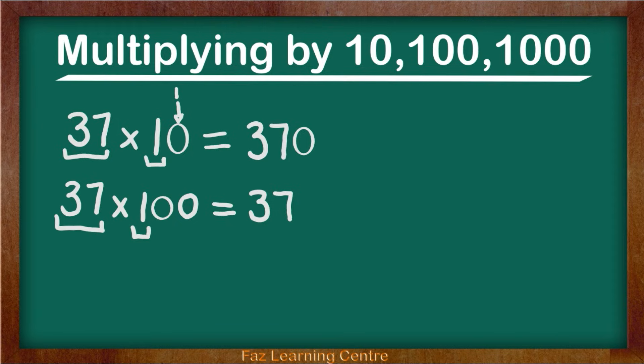How many 0's do we have? We have 2 0's: 1, 2. So we are going to be popping down 2 0's. The next question will be also very similar.